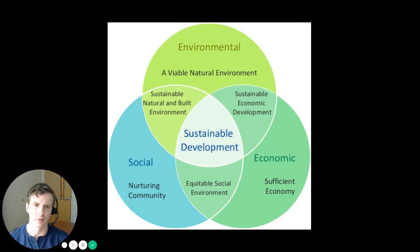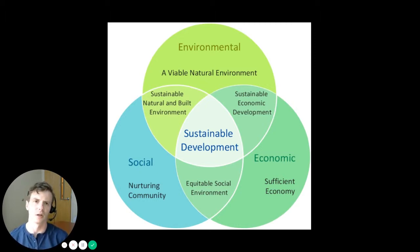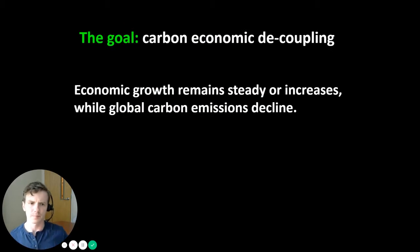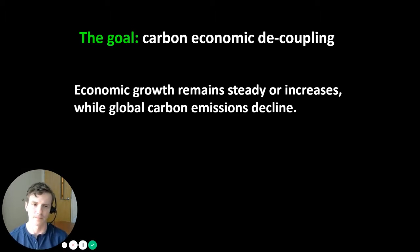Solving climate change does not just mean mitigating CO2 emissions. If we want to have sustainable societies, part of that means having environmentally sustainable societies, but it also means we need economically sustainable and socially sustainable societies. In essence, what we're really wanting is to have our cake and eat it too — we want to decouple the economy and carbon emissions. We want economic growth to remain steady or increase while global carbon emissions decline.